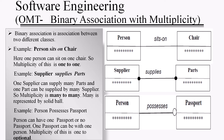The third example is person possesses passport. A person can have one passport or no passport, and one passport can be with one person, so the multiplicity of this association is one-to-optional. For the optional multiplicity, a hollow ball is used.